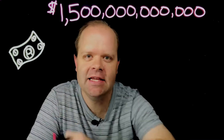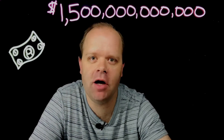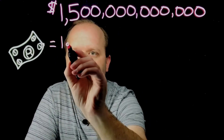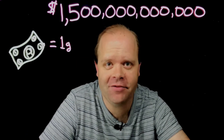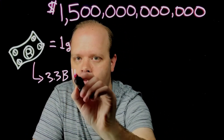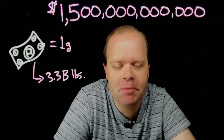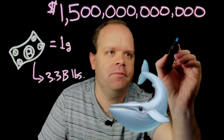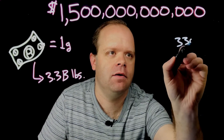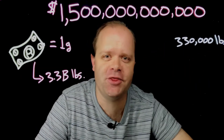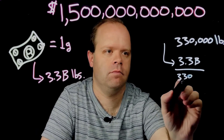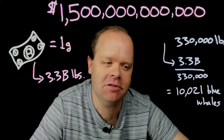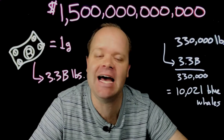Let's talk weight. A $1 bill has an approximate mass of one gram, and 1.5 trillion of them is 3.3 billion pounds. The largest blue whales can reach a weight of around 330,000 pounds, and that 3.3 billion pounds makes about 10,000 blue whales.